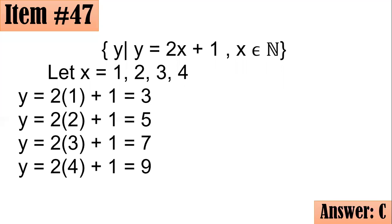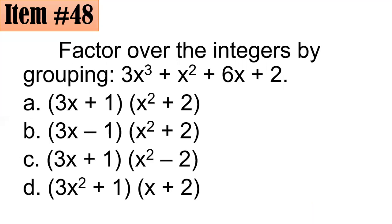48. Factor over the integers by grouping. The 3X cube plus X squared plus 6X plus 2. Did you go for A, B, C, or D? What do you think is correct?